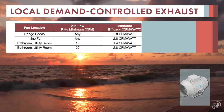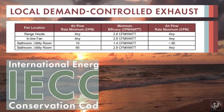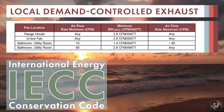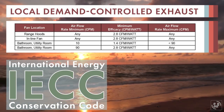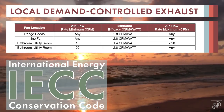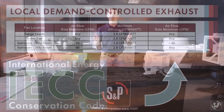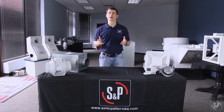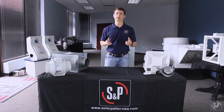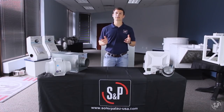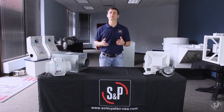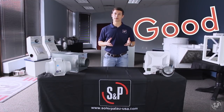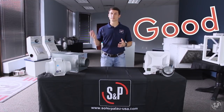In addition to these two basic requirements, the International Energy Conservation Code requires mechanical ventilation system fans to meet the efficacy requirements in this table. Now that we have a general understanding of residential IAQ and the codes and standards that regulate it, let's look at all of the S&P outside air product solutions, starting with the good and working our way to the best.